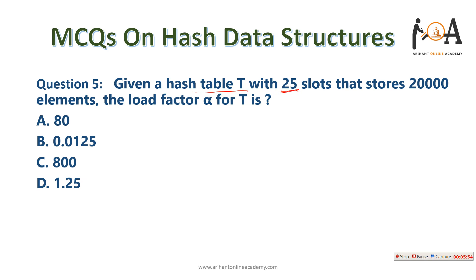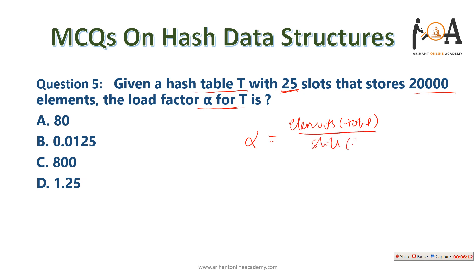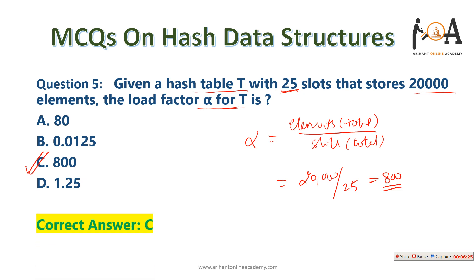Given a hash table T with 25 slots that stores 20,000 elements, the load factor alpha for T is: load factor = total number of elements / total number of slots = 20,000 / 25 = 800. So option C is the correct answer.